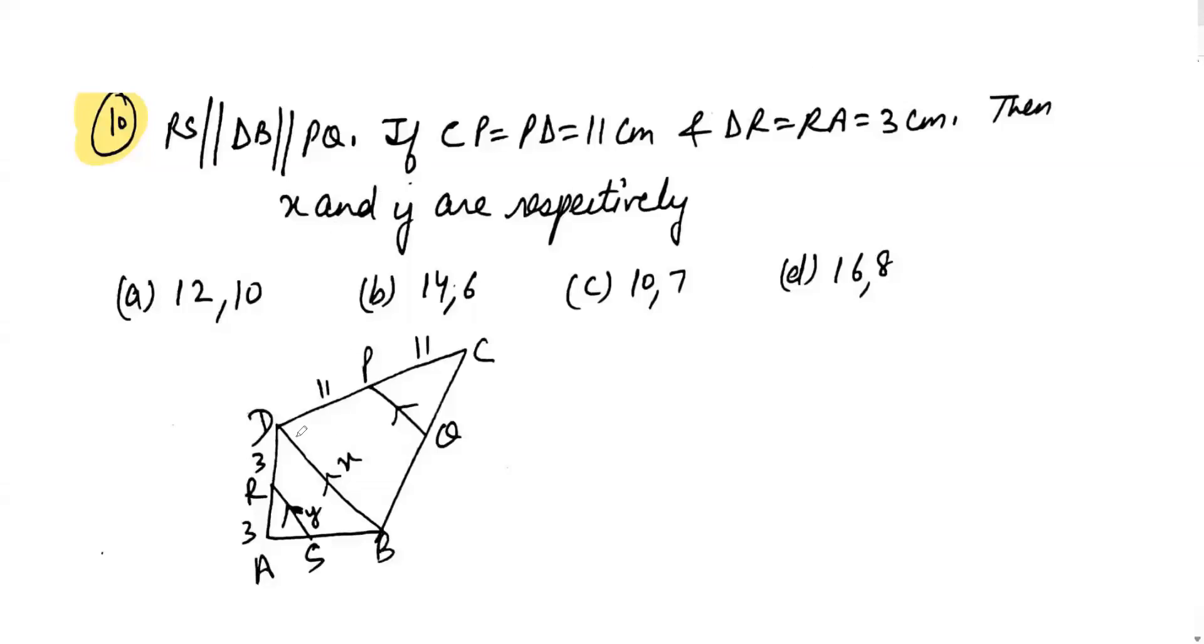In this question we have been given these three lines are parallel: RS is parallel to DD which is parallel to PQ. We know the length of DC as 11 cm, DP as 11 cm, the length of DD as x, and that of RS is y. We have RD as 3 and R as 3 again.